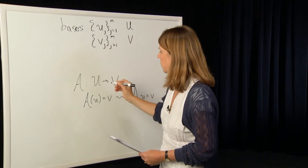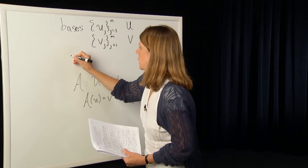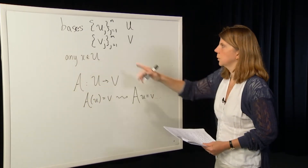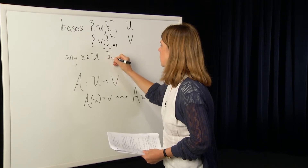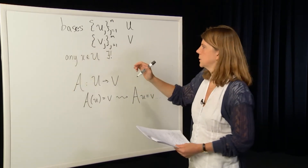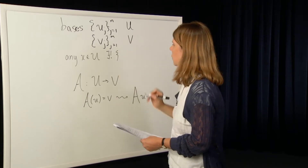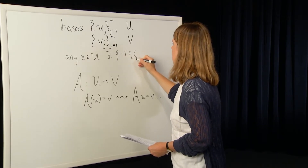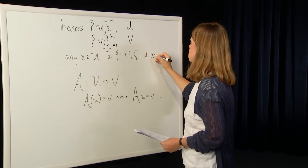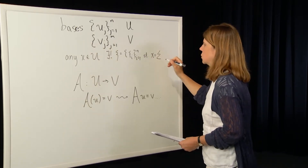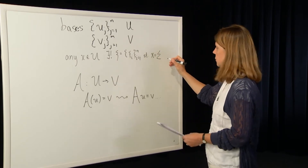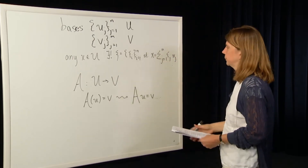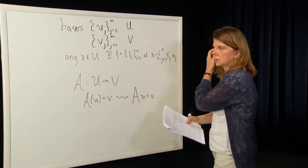For any X in U, there exists a unique coordinate vector c = {c_i, i = 1 to N} such that X equals the summation from j equals 1 to N of c_j times u_j. So there exists a unique coordinate vector for any vector X.